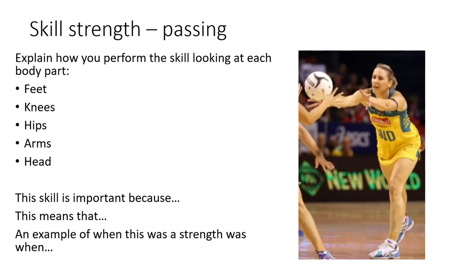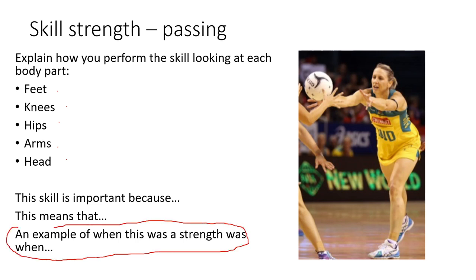When you talk about your skill strength, it's probably going to be slightly shorter. You still need to introduce your skill and break it down into each different aspect and body part, talking about how you perform the skill. But obviously it's not a weakness, so you are probably performing it correctly — you're not going to compare as such to an elite athlete, you just go through how exactly you perform that skill. Then explain why it's important, what that means for your team, the impact on your team, and give an example of when this was a strength — such as when you did really accurate passing and how that impacted your team.